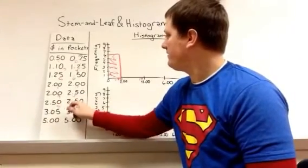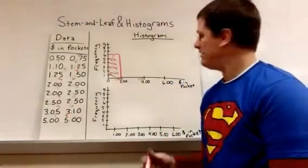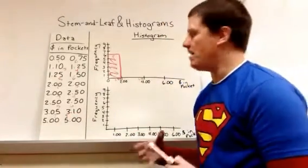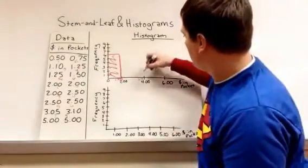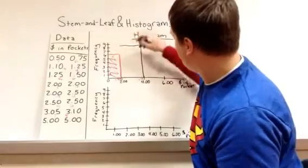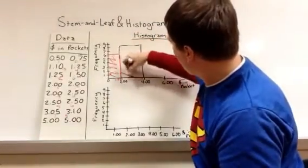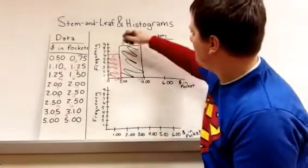five, six, seven, eight. We have eight data points that fall in that space. So we would go from here all the way up to eight. And there's our next set of data.